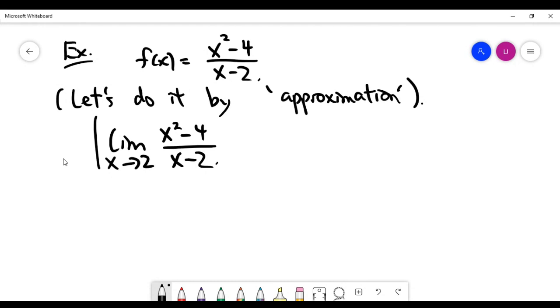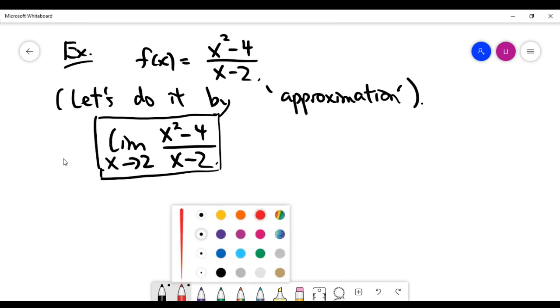So please recall from the last video, we understand that this notation essentially means when x is approaching 2, what value does the function approach? Keep this perspective in your mind. And there are two basically different ways to approach 2.